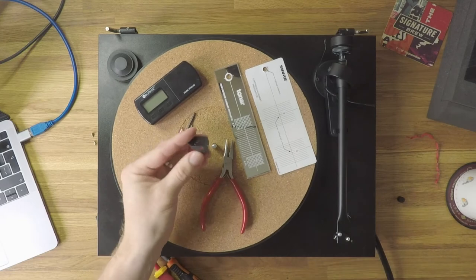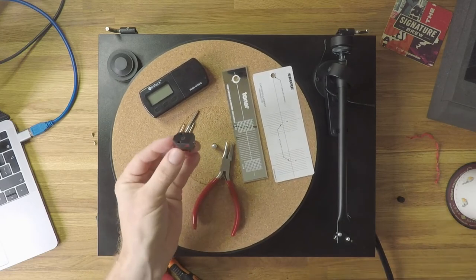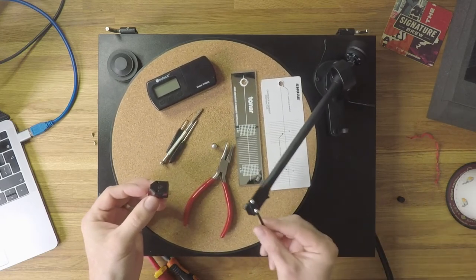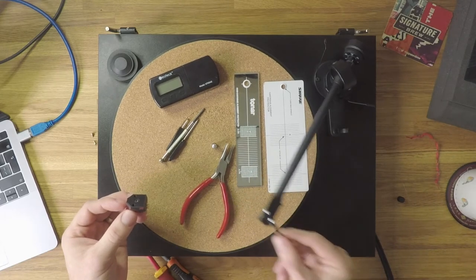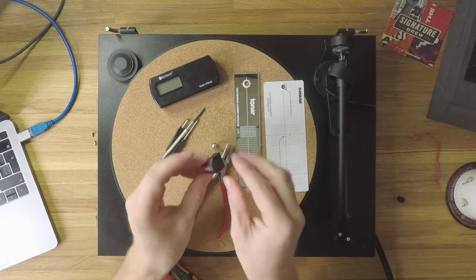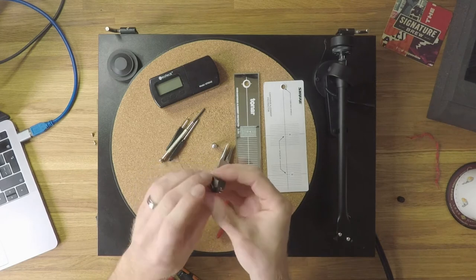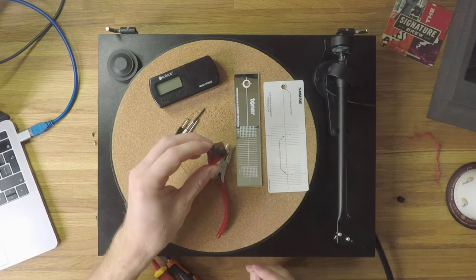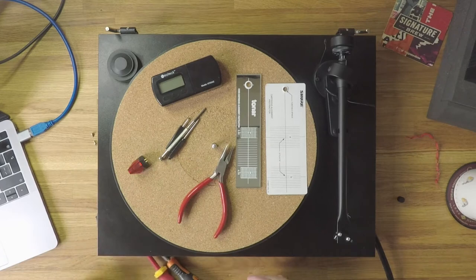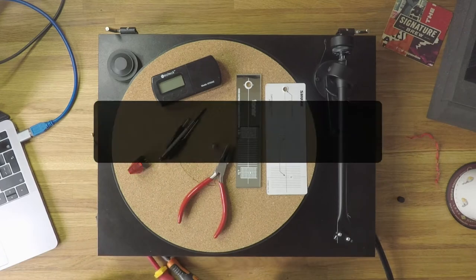And of course, you're going to need your replacement cartridge. In this instance, we're taking an OM5E Autophon cartridge, which is the one installed on this Project Essential 2 turntable here, and we're going to replace it with an Autophon 2M Red. That's what we're going to need to perform this task, and we'll get straight into the process.